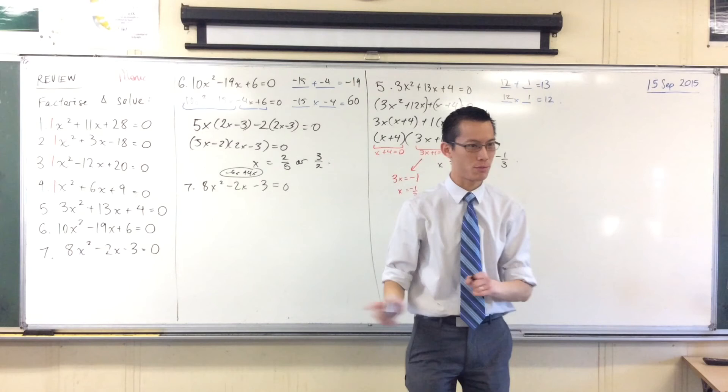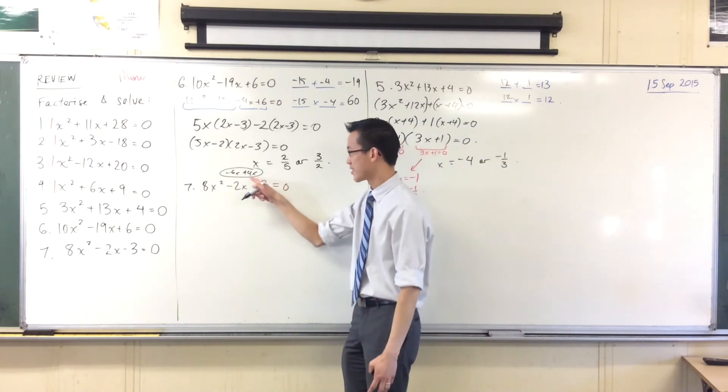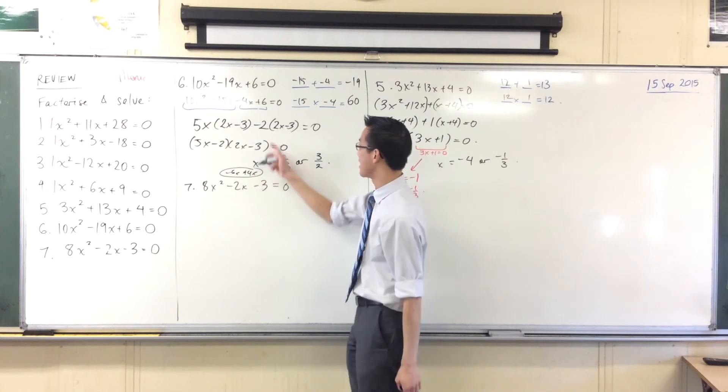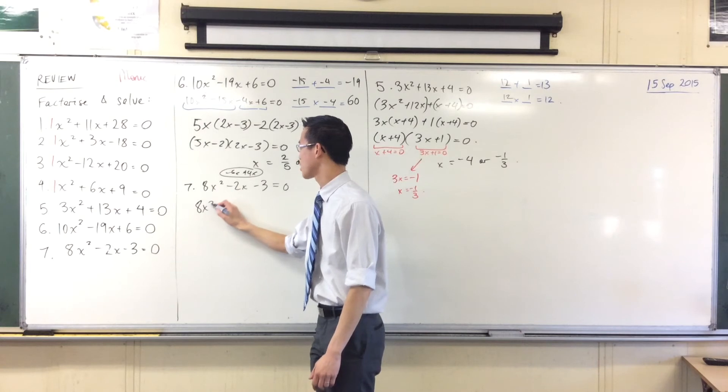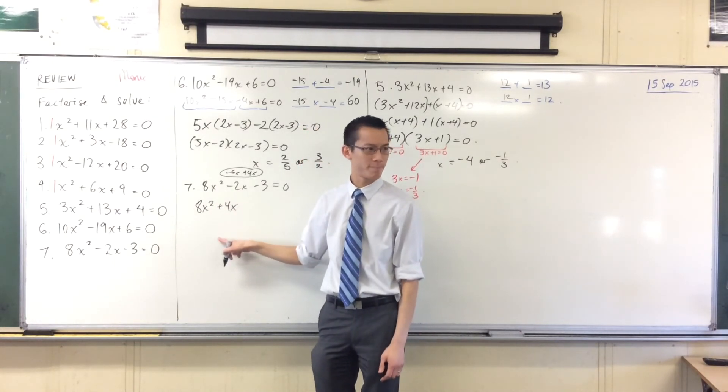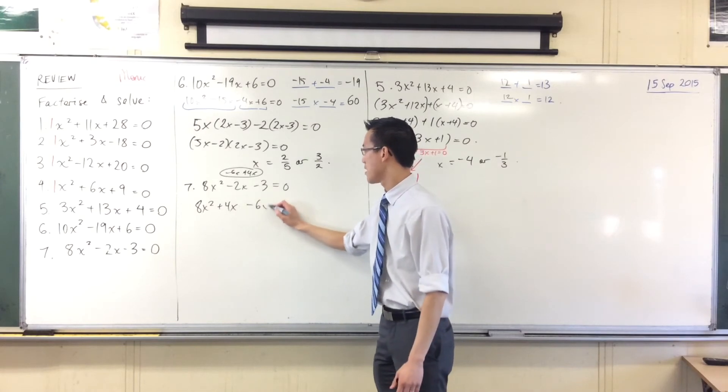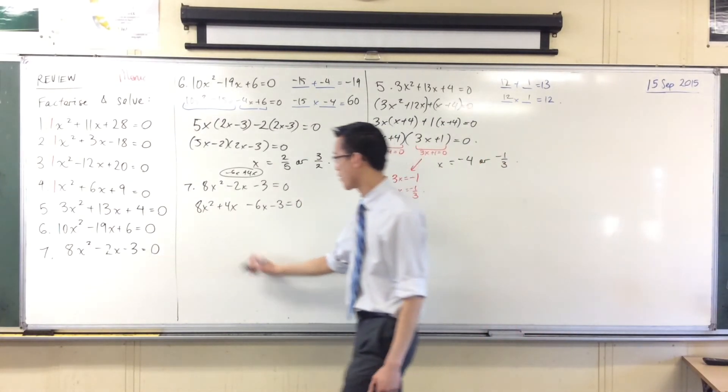Which one should be which? Which one should go first? The 4x, now this is an interesting one. Remember how I said usually big numbers go with big numbers? They don't always, every single time. If I write out 8x squared plus 4x, you can see these guys have a lot in common. And then I'm going to write my minus 6x minus 3 along the end. Now I can pair up.